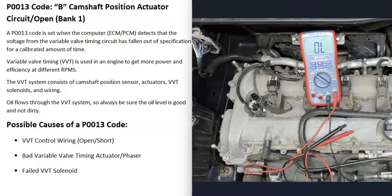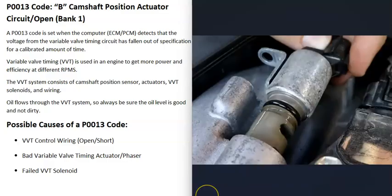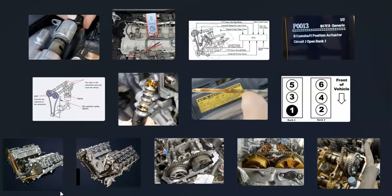If you have a good OBD2 scan tool, there are other ways to test it — there are good YouTube videos on that. To summarize, the main causes of a P0013 code are issues with the wiring, the actuator or phaser, or the solenoid controlling the camshaft position actuator on bank one, camshaft B. If you have anything to add, please comment below. If you have questions, ask. If this video helps you, please like, subscribe, and have a good day.